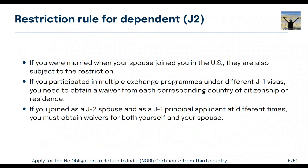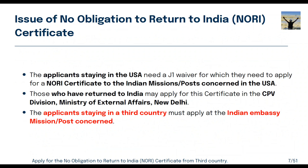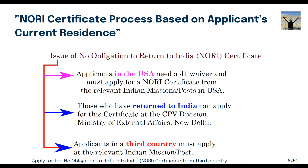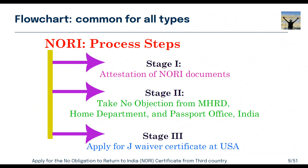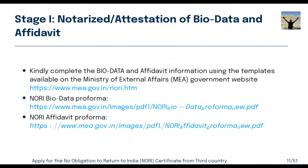There are three scenarios for the waiver process: if you are still staying in the USA, if you have returned to India and applying from India, and third — the scenario I'm covering now — for applicants staying in a third country, neither the US nor India. The steps — Stage 1, Stage 2, and Stage 3 — are common for all scenarios. This video is only for applicants staying in a third country.